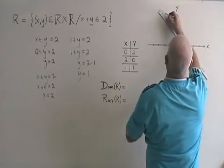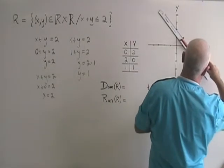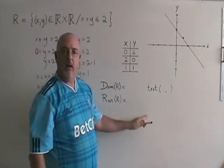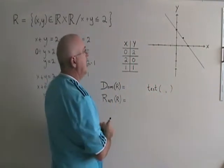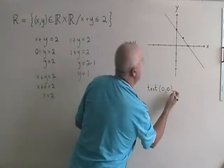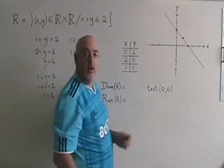and now I have to decide which side of the line I am shading. I use the test point. I am going to use the test point (0,0), because this line does not go through (0,0).